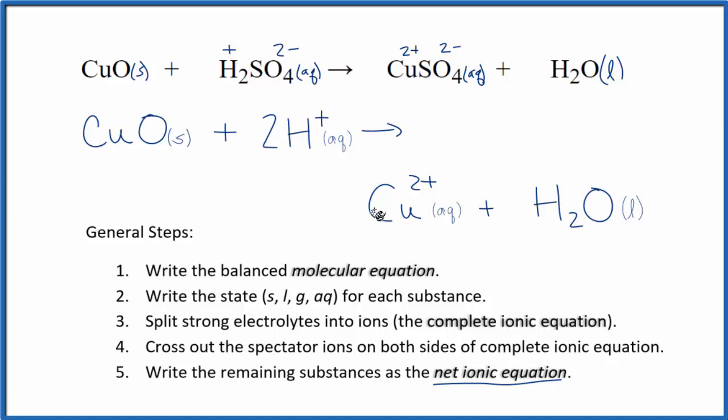So this is our net ionic equation for CuO plus H2SO4, that's our copper 2 oxide plus our sulfuric acid. Note that it's still balanced. The atoms are the same. And also we have the same net charge on each side. It's a good way to check with net ionic equations. This is Dr. B, and thanks for watching.